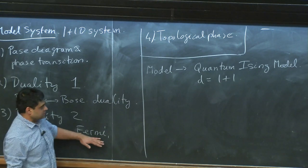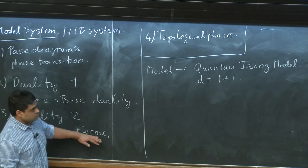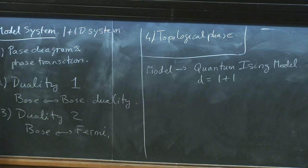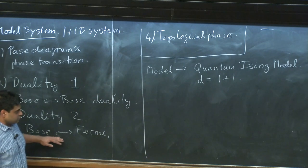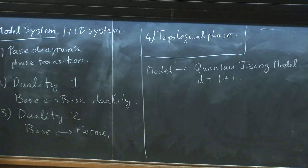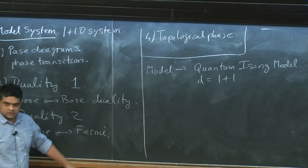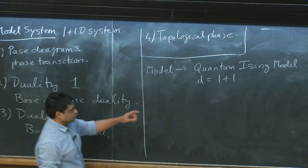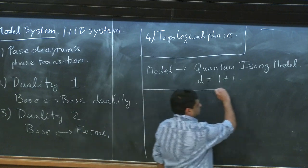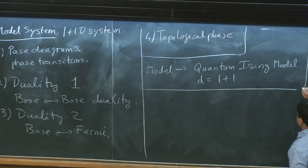People like Onsager, through some tour de force of mathematical physics, figured out that you can make this transformation. They wouldn't have phrased it in these words, but now in retrospect we know that they really found this duality and went and solved the free problem. It'll turn out that when you do the quantum model, it's much easier to see all of this physics. So we'll work with this quantum model.